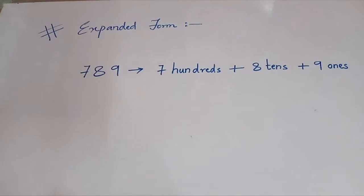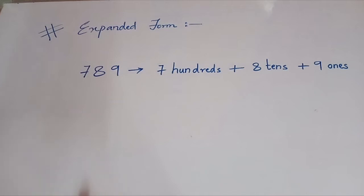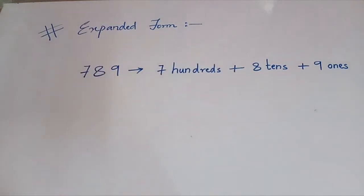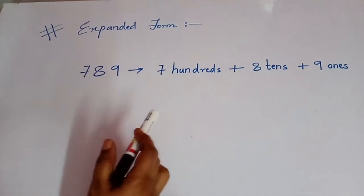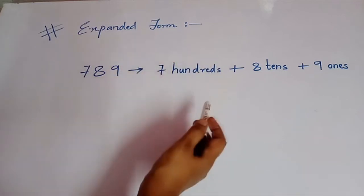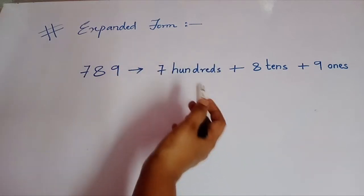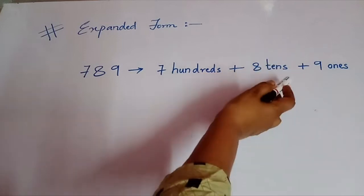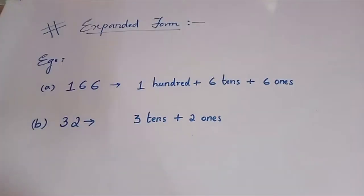Now we will come to the next topic, that is expanded form. This is also related to place value. When you are asked to give the expanded form of a number, you are supposed to expand the number according to the place value of its digits. For example, take the number 789. How will you expand this number? 7 hundreds plus 8 tens plus 9 ones. Basically, they are asking how many hundreds, how many tens, and how many ones are there.